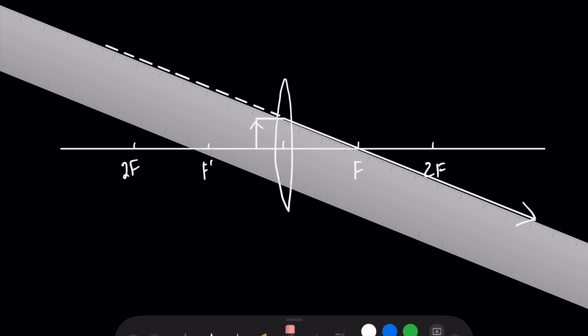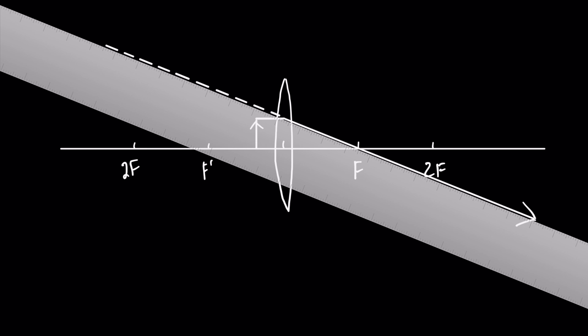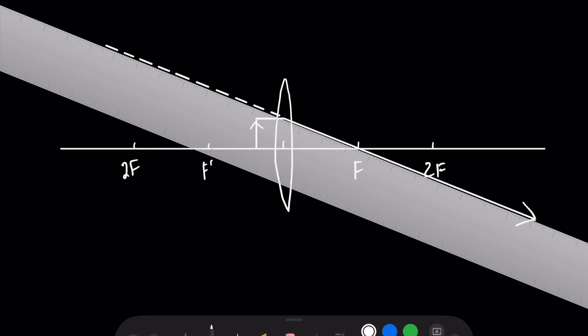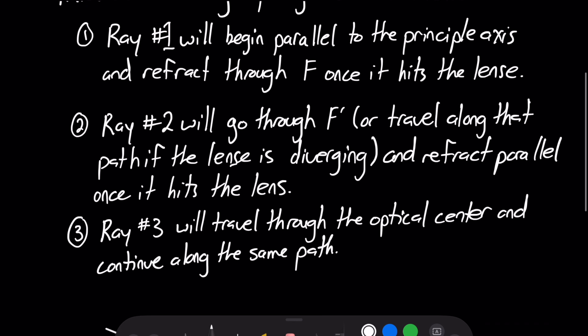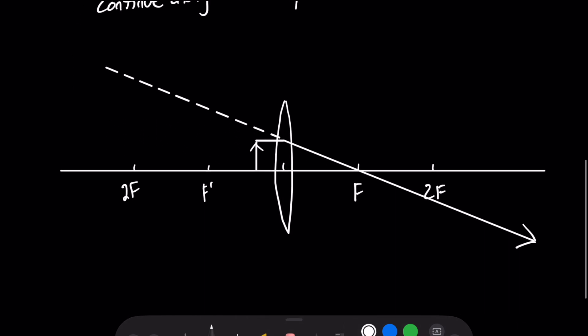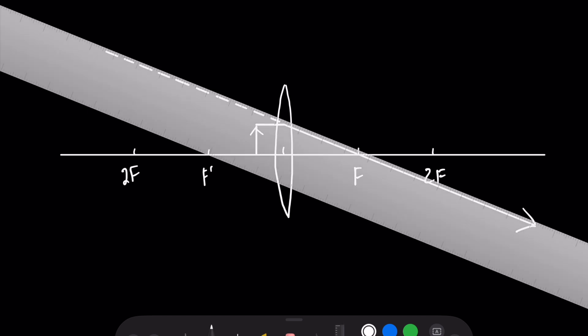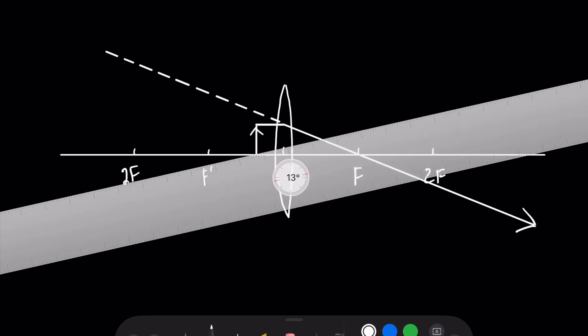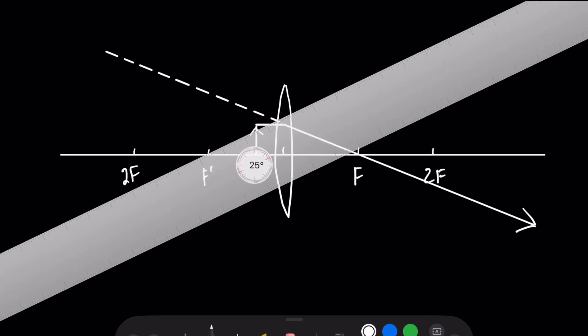And by backtrack, I just mean this dotted line right here. Okay, so rule number two, let's scroll up here. I'm just going to put away my ruler for a second so it doesn't get in the way. Rule two says ray number two will go through the secondary focal point or travel along that path if the lens is diverging and refract parallel once it hits the lens.